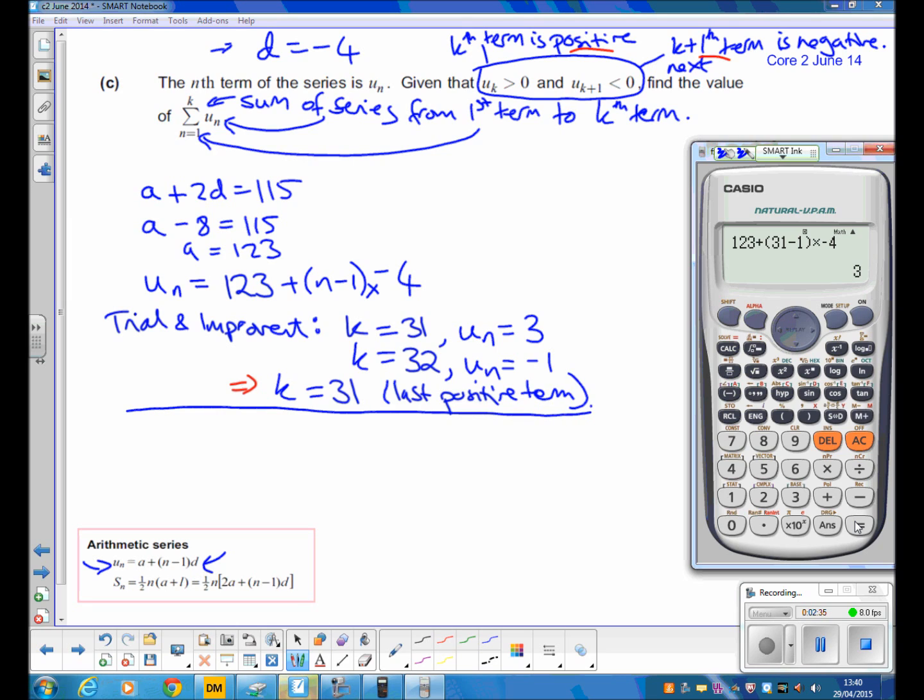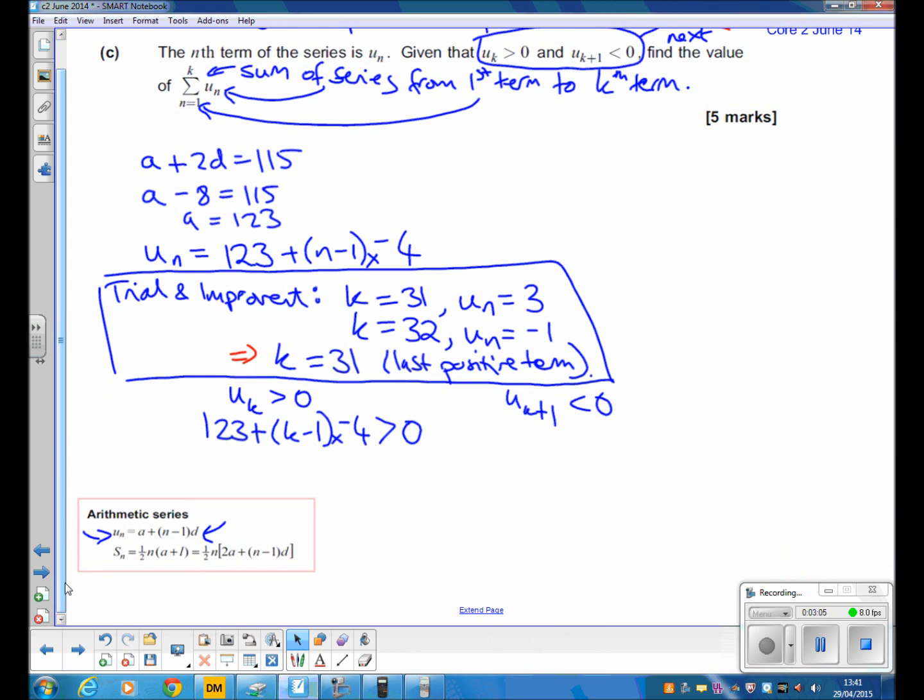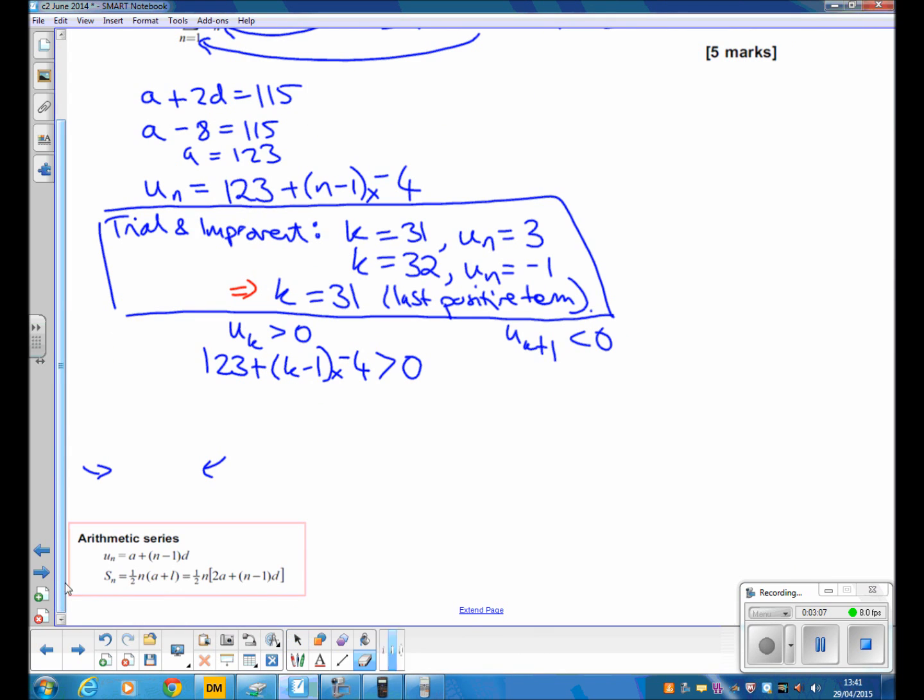How would we do that with equations? Well, if we're going to do that algebraically, what we need to do is actually write an inequality. We know uk is greater than 0. So let's do the nth term formula with k: 123 plus k minus 1 times negative 4 is greater than 0. That means 123, negative 4 times k, negative 1 times negative 4 is greater than 0.